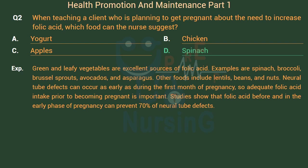Other foods include lentils, beans, and nuts. Neural tube defects can occur as early as during the first month of pregnancy, so adequate folic acid intake prior to becoming pregnant is important. Studies show that folic acid before and in the early phase of pregnancy can prevent 70% of neural tube defects.